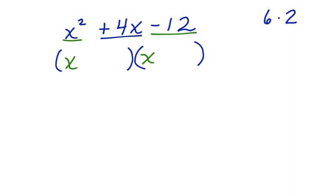6 times 2 will give us 12. If we make the 6 positive and the 2 negative, then 6 plus negative 2 will give us a positive 4. Let's substitute that into these two binomials. We can put plus 6 minus 2. Now we have x plus 6 times x minus 2.